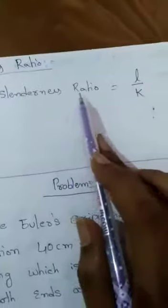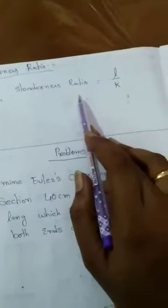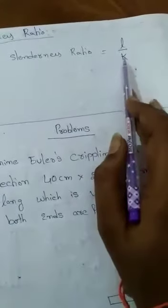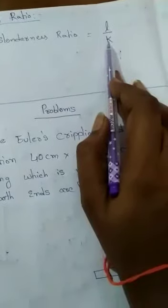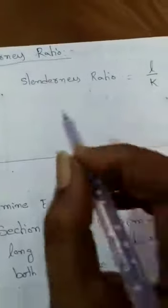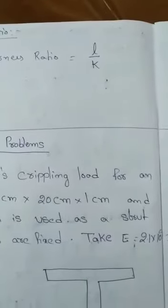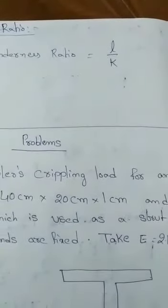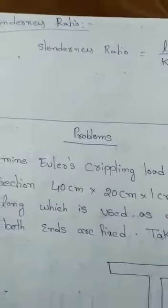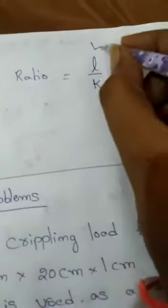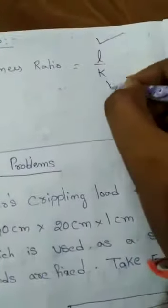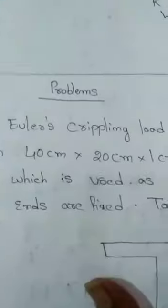The next topic is slenderness ratio. Slenderness ratio is defined as the ratio of the actual length of the column to the least radius of gyration. It equals L/k, where L is the length of the column and k is the radius of gyration.